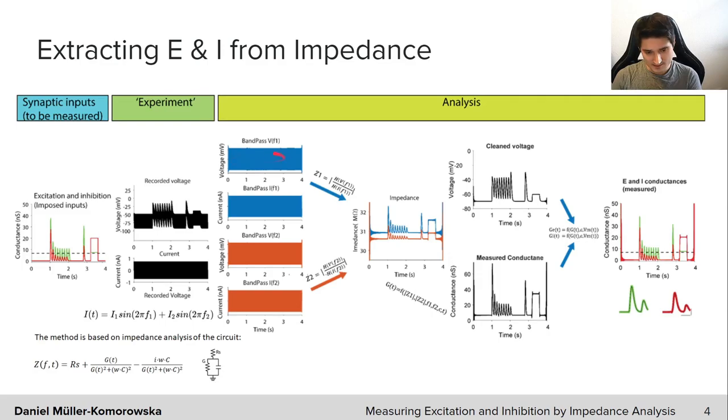However we can of course also band pass filter around f1 and f2, and what we get then is these waveforms. If we take the envelope of those we get the impedance. Now to get from the impedance to the total conductance we can use this equation which describes the impedance at a frequency f for this rather simple RC circuit. We can rearrange this formula such that we have Gt on the left, and having two frequencies we can isolate the total conductance. Now with the clean voltage and total conductance, as I showed on the previous slide, we can calculate Ge and Gi. As you can see, we have almost perfectly isolated these. Our measured result in the simulation looks almost identical to the ground truth conductances.